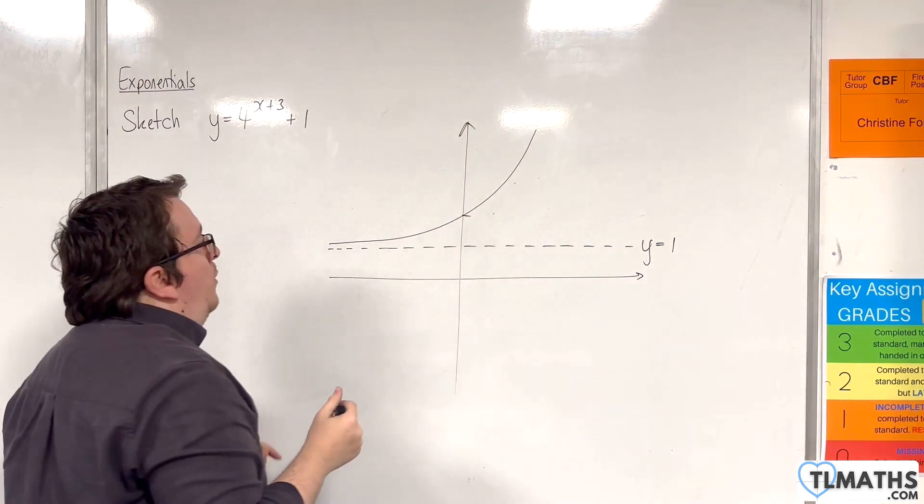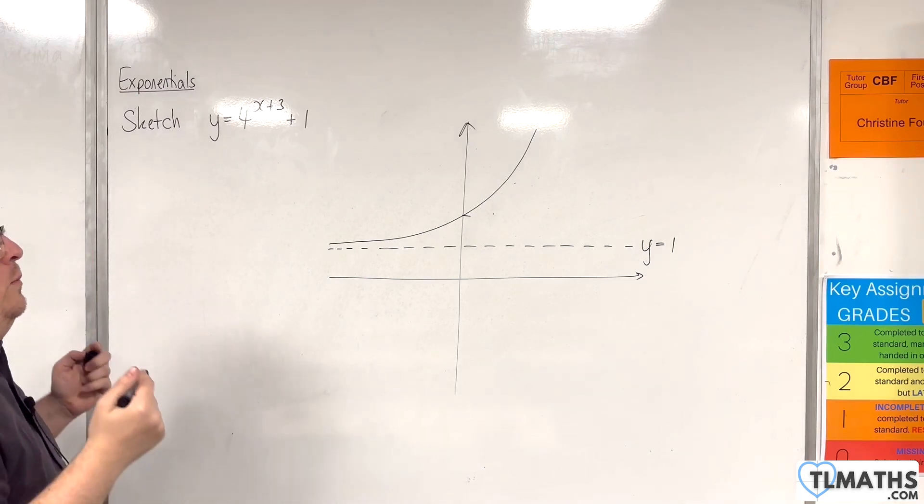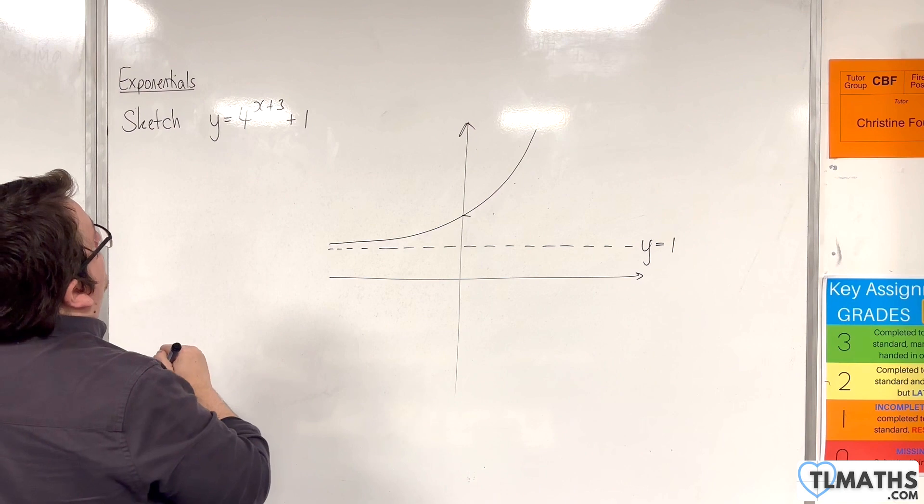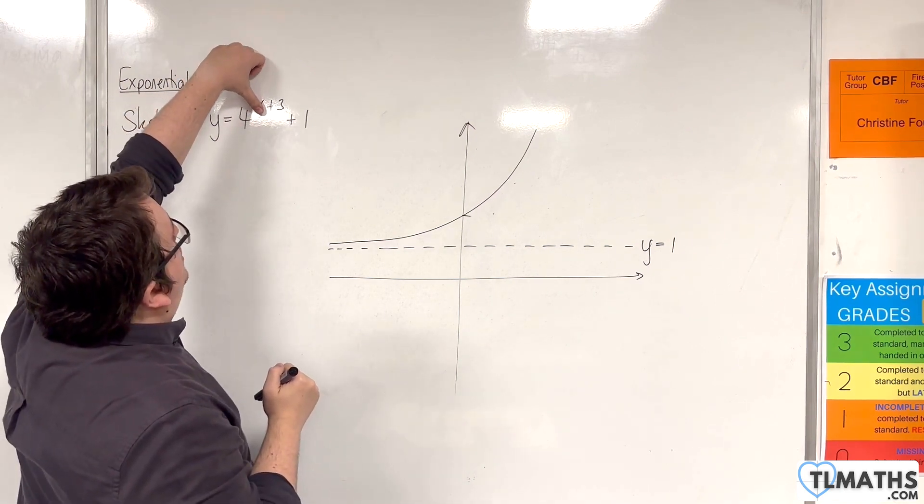It's just we have one point of interest is when it's crossing the y-axis. So that's when x is 0. So when x is 0.